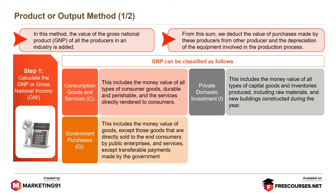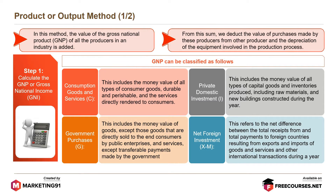Government purchases (G), that is the money value of all goods except those goods that are directly sold to the end consumers by public enterprises and services, except transferable payments made by the government. And net foreign investment (XM), which refers to the net difference between the total receipts and total payments to foreign countries resulting from exports and imports of goods and services and other international transactions during a year.